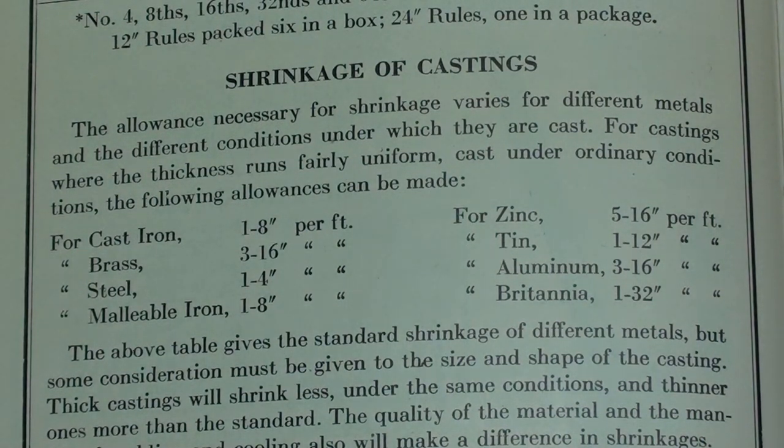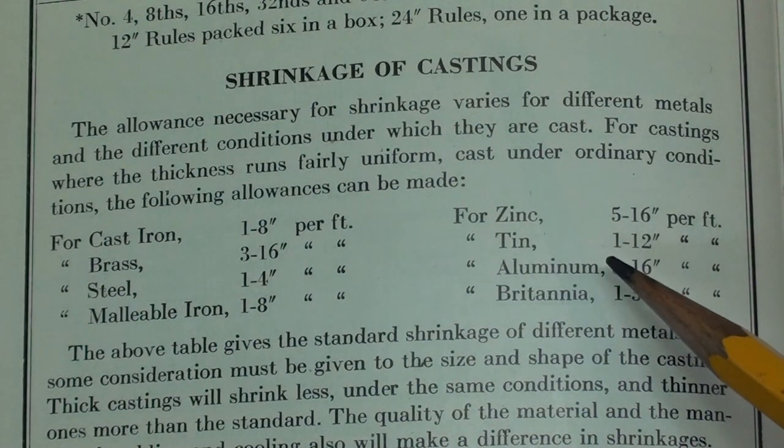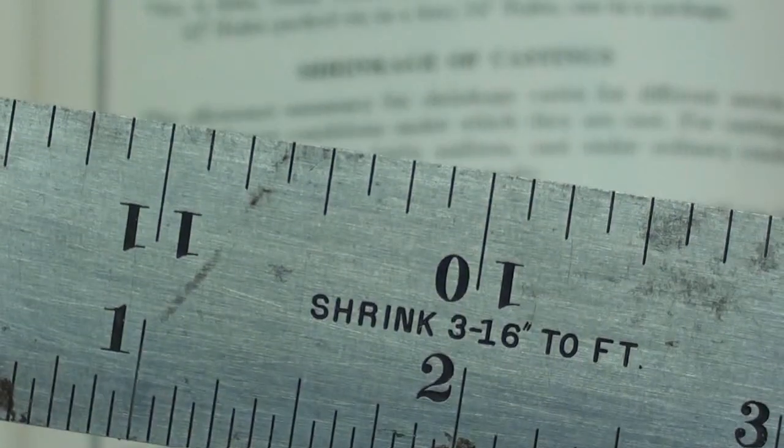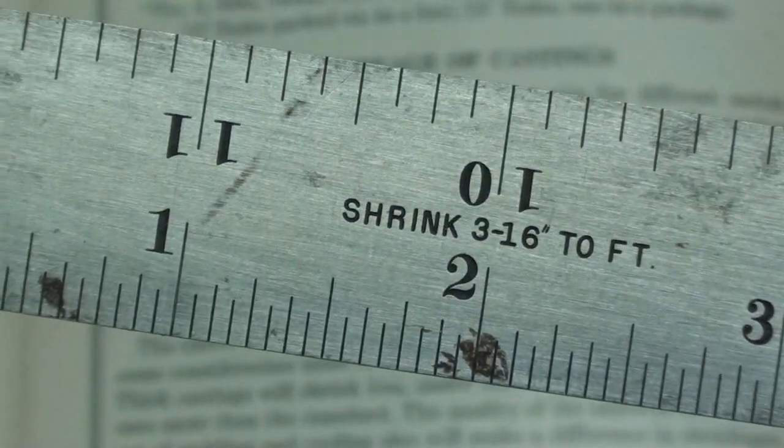I'm going to goof up that word all the time, so don't worry about it. But for aluminum really is the only material that I ever cast. I use the 3/16ths shrink in inches per foot. So this is the rule that I use.